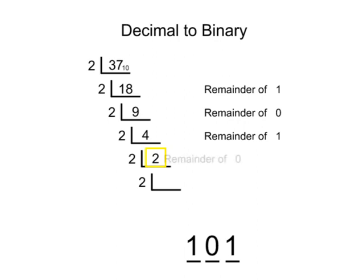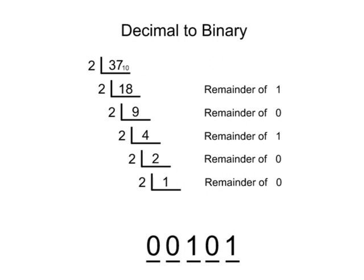Applying this divide by 2 process to each new calculated quotient derives the remainders that become the 0s or 1s used to create the binary string. Continuing until the quotient is 0 and can no longer be divided by 2 completes the conversion process, and you have your binary number.